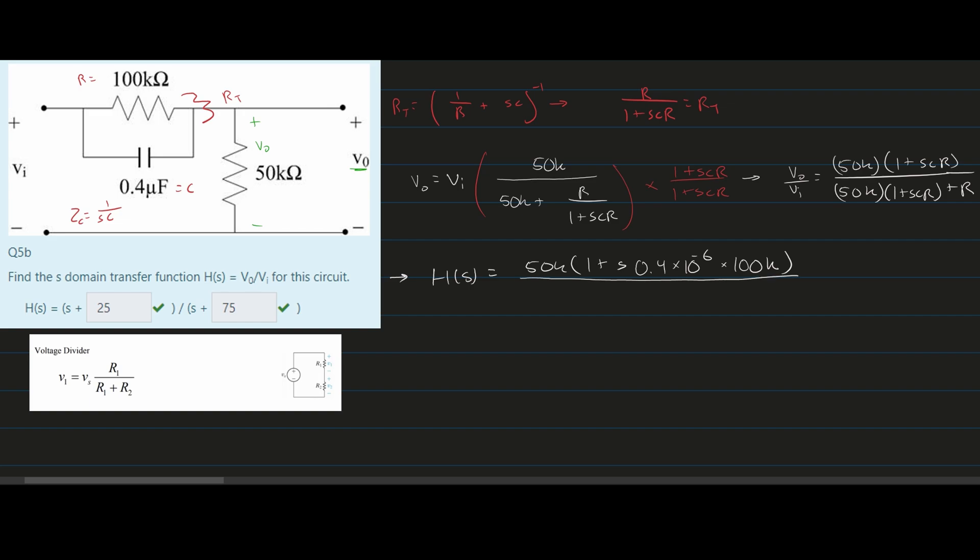In the denominator, we have 50K multiplied by 1 plus S times 0.4 times 10 to the negative 6 times 100K, plus R. Our R is 100 kilohms, so we have plus 100K.